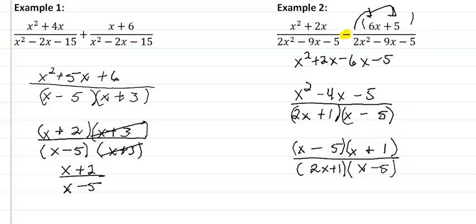We are looking for the common factors which looks like it's going to be x minus 5. Leaving us with an answer of x plus 1 all over 2x plus 1. And we're done.